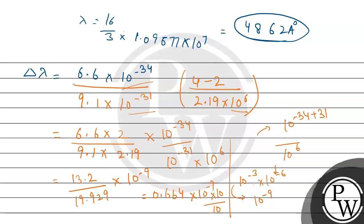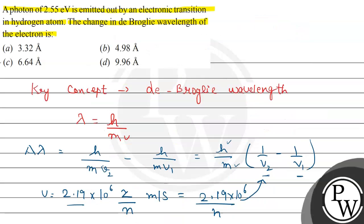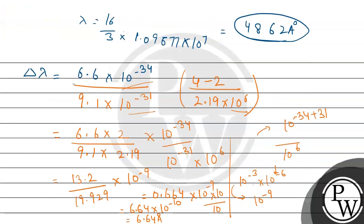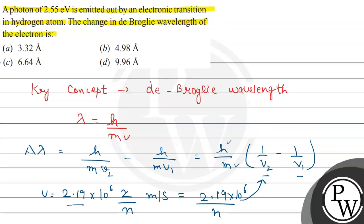Dividing and multiplying by 10, we get 6.64 × 10⁻¹⁰ meters, which is 6.64 Angstroms. From the given options, the final answer is option C, that is 6.64 Angstroms. Options A, B, and D are incorrect. This was the whole solution — hope you understood it well. Best of luck.